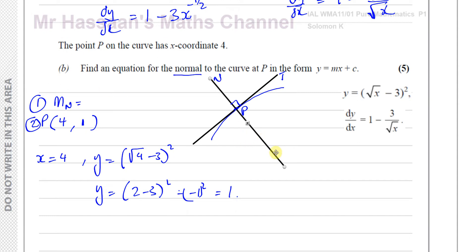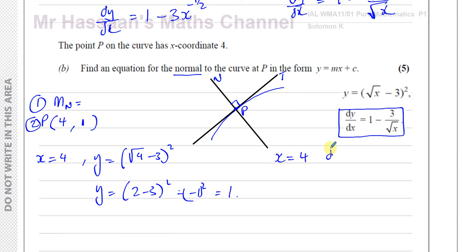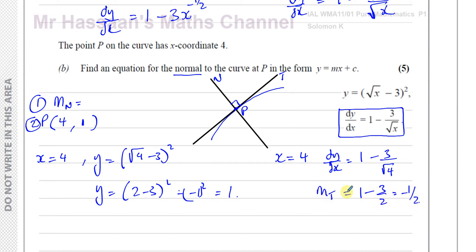To find the gradient of the normal, we first find the gradient of the tangent. The gradient function dy/dx tells us the gradient at any point. Substituting x = 4: dy/dx = 1 − 3/√4 = 1 − 3/2 = −1/2. That's the gradient of the tangent. The normal is perpendicular, so its gradient is the negative reciprocal: −1/(−1/2) = 2.